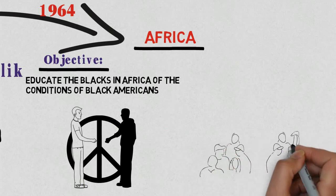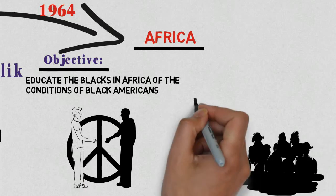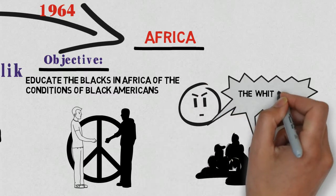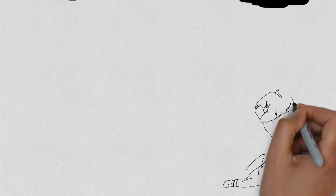Malcolm was the center of controversy. His speeches were stirring up the black masses. He was being accused of preaching violence. However, Malcolm was for self-defense against any oppression by any means necessary, not violence.